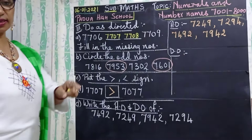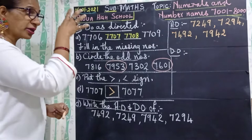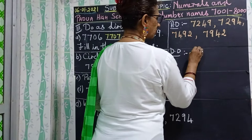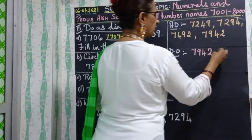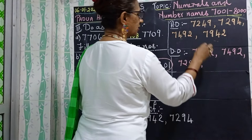Now for descending order, we simply reverse the ascending order — writing the greatest number first and the smallest number last. So when we write the descending order, we start with 7942, then 7492, then 7294, and last 7249.